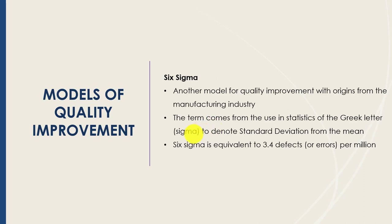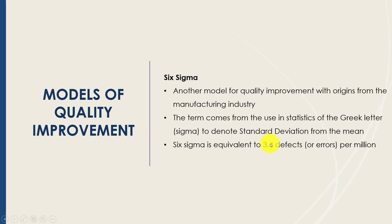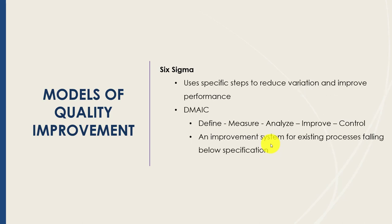There are other models beyond PDSA. One is Six Sigma, which originated in the manufacturing industry. The term comes from statistical terminology, with sigma denoting a standard deviation from the mean. Six Sigma is basically equivalent to 3.4 defects or errors per million, making great strides in reliability and reducing defects.